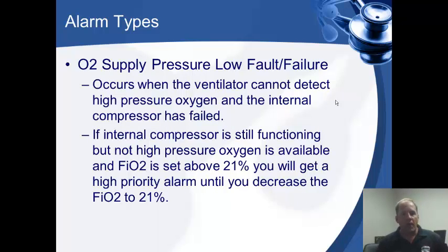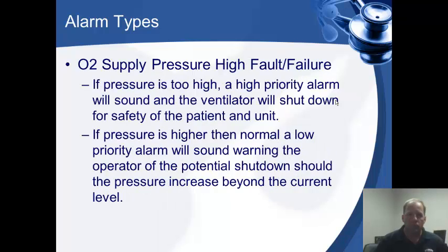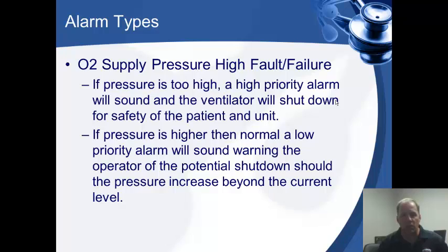If your O2 supply pressure is low, the vent will let you know. You may have to switch off the high pressure source, use the oxygen reservoir, or go to another tank. If the O2 supply pressure is too high, that means there's something wrong with the regulator. You'll need to go back to the reservoir, turn it on, connect a BVM on low-flow oxygen from an oxygen tree, and proceed that way until you can get the regulator looked at.